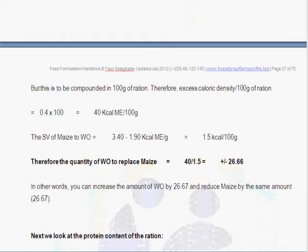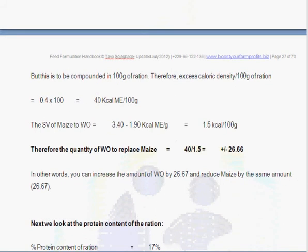The substitution value of maize to wheat offal will be the difference between the energy values of the two, and that gives us 1.5 kilocalories per 100 grams. The quantity of wheat offal to replace maize will be the 40 kilocalories divided by 1.5 kilocalories. You can see we've just cancelled out the energy units, and what you're left with is the quantity, and that's why we have plus or minus 26.66.